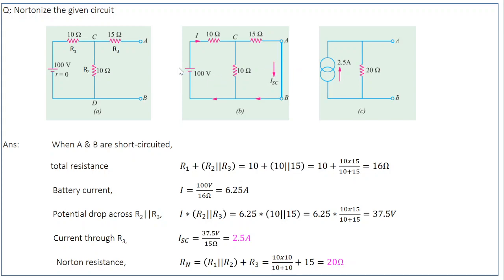Next, calculate the Norton resistance. Looking from the output terminals with the voltage source short-circuited (internal resistance = 0), R1 and R2 are both in parallel, and this parallel combination is in series with R3. So Rn = (R1 ∥ R2) + R3 ≈ 20 Ω. The equivalent Norton circuit is a 2.5 A current source in parallel with the Norton resistance of 20 Ω.